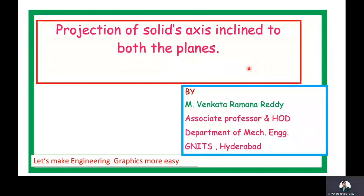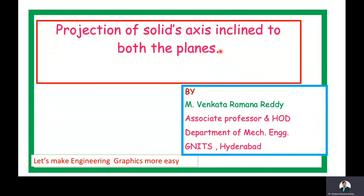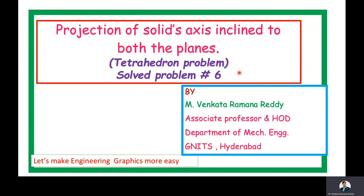Good morning, dear students. Welcome to the discussion on the topic: projection of solids with axis inclined to both planes. Under this, we are now discussing the tetrahedron problem. This is the sixth solved problem under projection of solids with axis inclined to both planes.